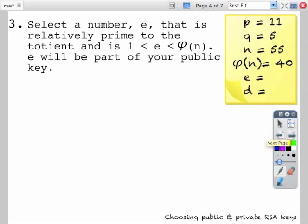The next step is to select a number e that is relatively prime to the totient and is 1 < e < φ(n). e will be part of your public key. A number is relatively prime to another number if those two numbers don't share any other factors except for 1.